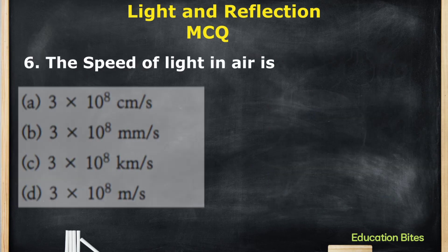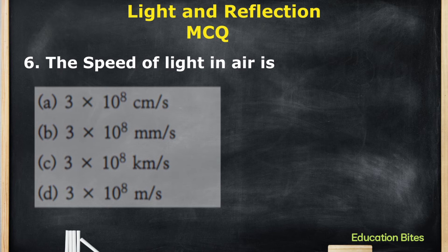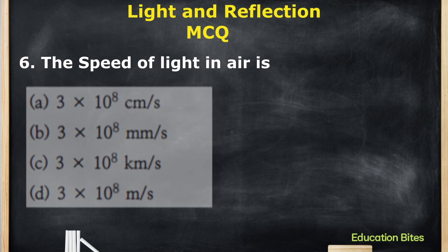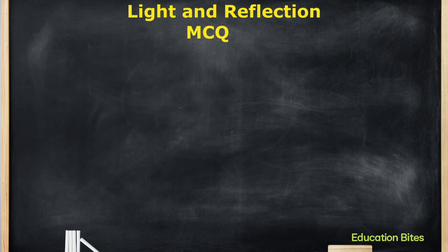The next question: The speed of light in air is. The answer is very clear. The correct option is D: 3 × 10⁸ meters per second.